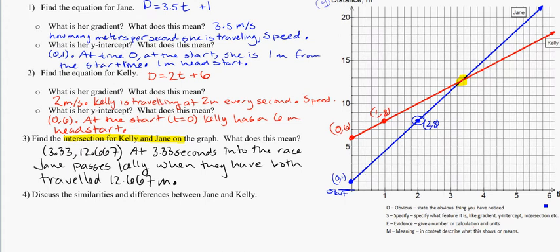Something that some people are finding helpful for writing statements and making sure they get everything in there is this little acronym here, AWESOME. So state the obvious, anything that we've noticed. Specify, be specific about what feature it is, and that's saying things like the gradient, the y-intercept, or an intersection. Give some evidence, what are the numbers for it, and then put it into context or into meaning. And if you can kind of do that for three features or so that you notice, you'll be in pretty good shape for the write-up for these.